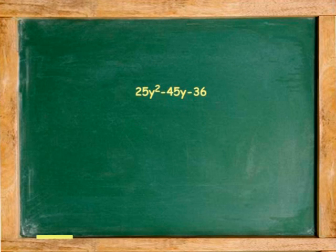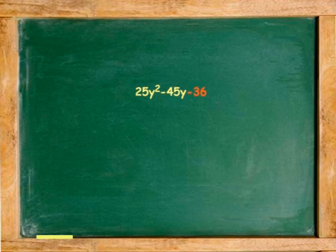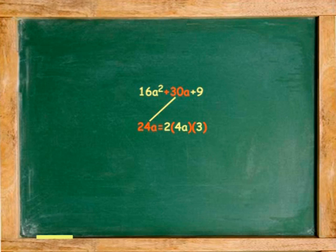Another example: 25y² − 45y − 36 is not a perfect trinomial square because the last term is negative. Another example: 16a² + 38 + 9 is not a perfect trinomial square because the middle term is not twice the product of the square roots of the first and last terms.